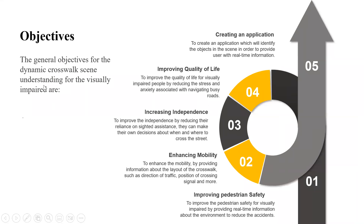The objectives for the dynamic crosswalk scene understanding for the visually impaired are: first, to improve pedestrian safety by providing real-time information about the environment to reduce the risk of accidents; next, to enhance mobility by providing information about the layout of the crosswalk such as direction of traffic and position of crossing signals; next, to improve independence by reducing reliance on sighted assistance so they can make their own decisions about when and where to cross; next, to improve quality of life by reducing the stress and anxiety associated with navigating busy roads; and finally, to create an application that identifies objects in the scene to provide the user real-time information.